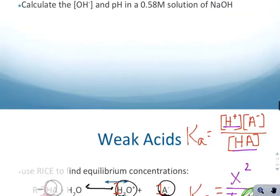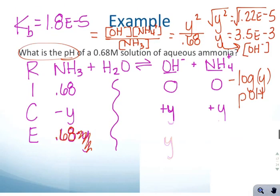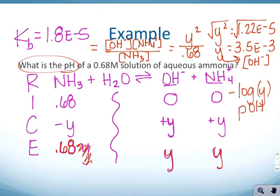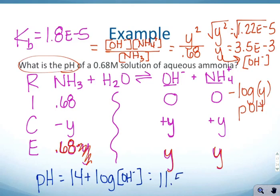Scrolling back to where we were, pH equals 14 plus the log of the hydroxide ion concentration, which is going to equal—let's see, the hydroxide ion concentration was 3.5×10^-3—and we get 11.5 is your pH. Actually, we're allowed one more sig fig than that, 11.54. So that's our pH.